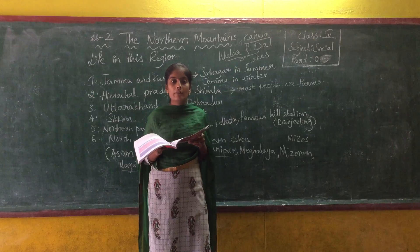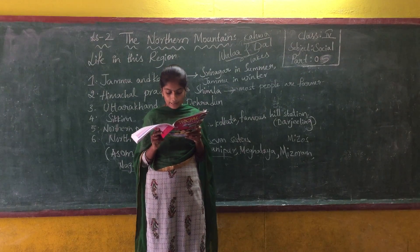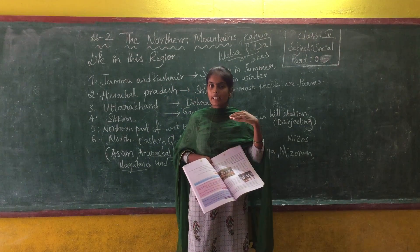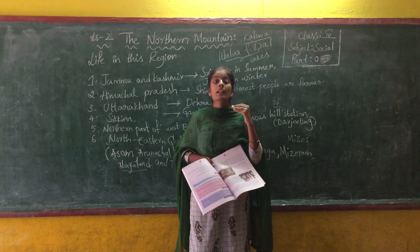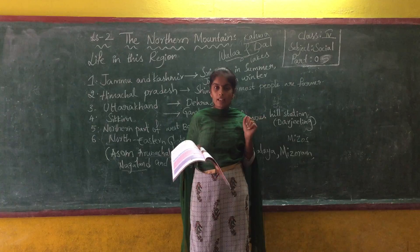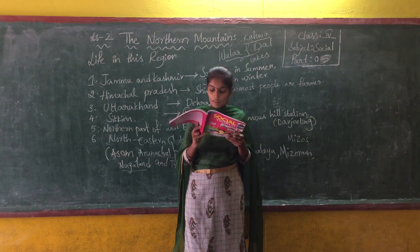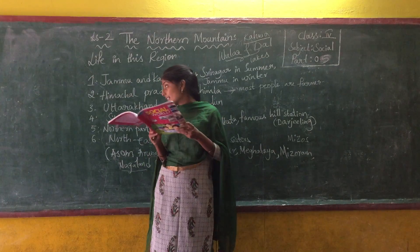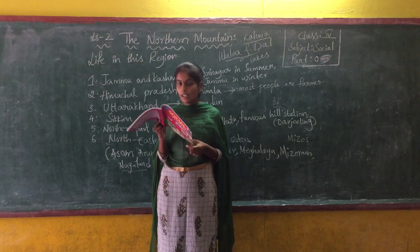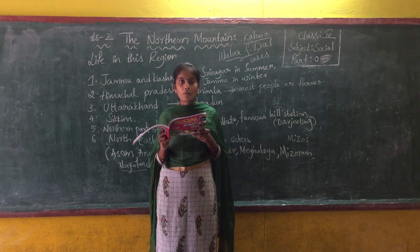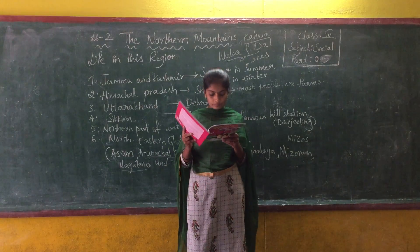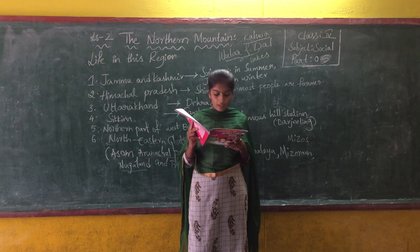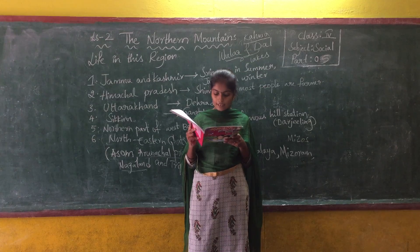The Himalayas also prevent rain winds from leaving India, and as a result India gets heavy rainfall. The glaciers of the Himalayas provide water to the main rivers of India. The forests of the Himalayas provide valuable products like timber, honey, resin, and medicines.